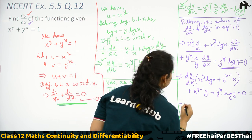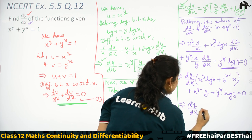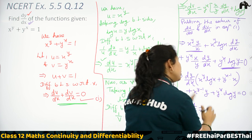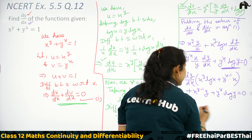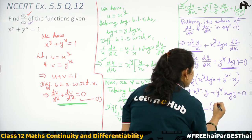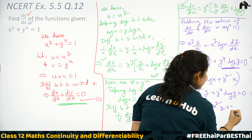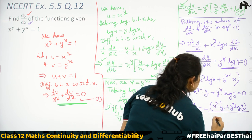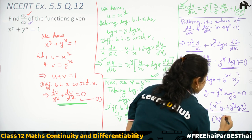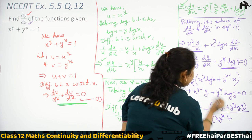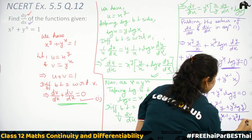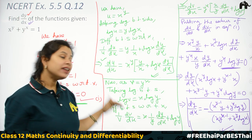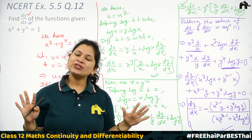This is the final answer for question 12, where we had to find dy/dx from the given equation x^y + y^x = 1. Clear, understood, no confusion? So let's see question number 13.